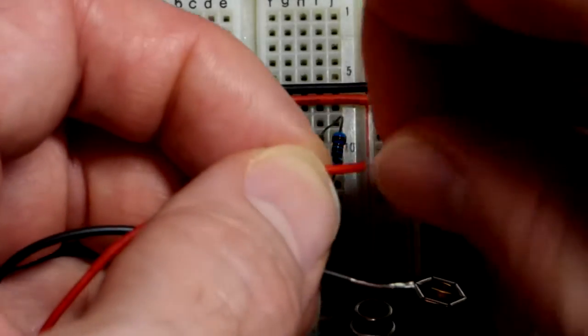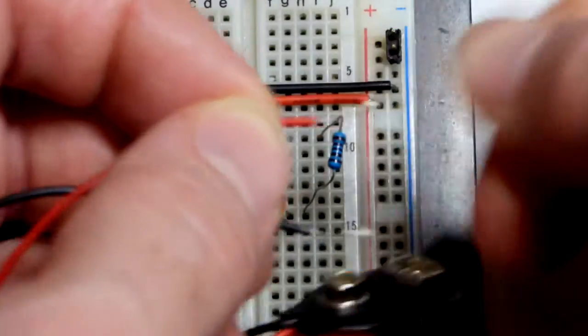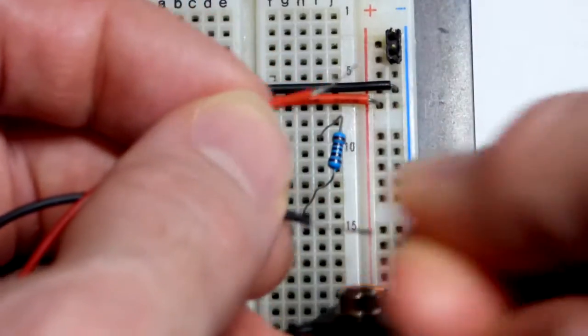The wires for the snaps don't insert into breadboards very well, so it's a good idea to give them a good twist.